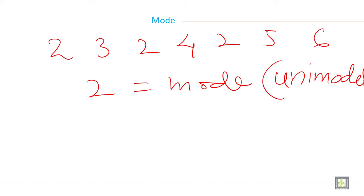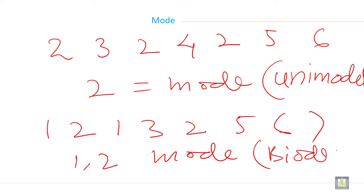But when you have two mode, for example, 1, 2, 1, 3, 2, 5, 6, 7. For example, suppose, so 1 and 2 is repeated two times. So 1 and 2 is the mode. And it is called bimodal. Bimodal. It is called bimodal.